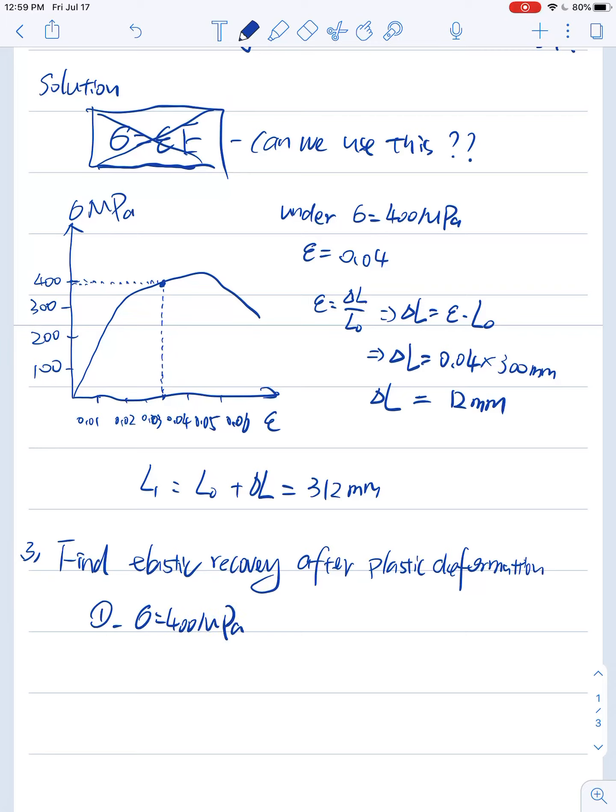And in this case, since sigma equals 400 MPa, it's larger than the yielding strength, I think here is around 300. That's why we have plastic deformation.